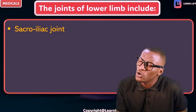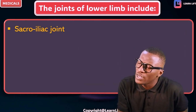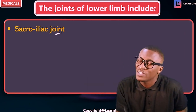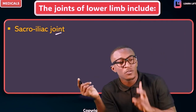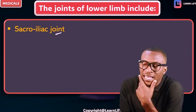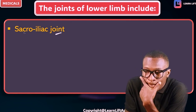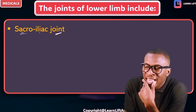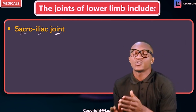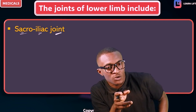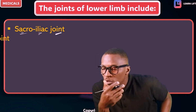The first joint we are going to call the sacroiliac joint — from the word sacrum and ilium. So the point where the sacrum and ilium meet is called the sacroiliac joint.